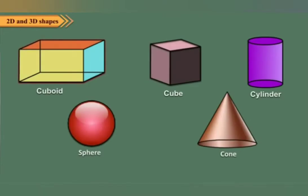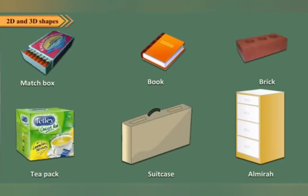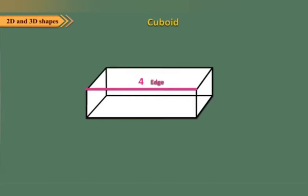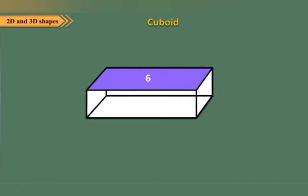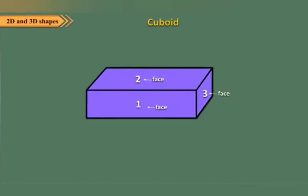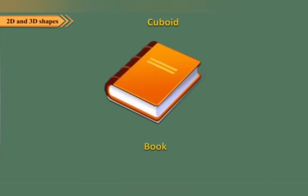Some solid shapes are as follows. Look at the shapes of objects shown here — all these objects have the shape of a cuboid. A cuboid has 12 edges. The point where three edges meet is called a vertex. A cuboid has eight vertices and six faces. In the given figure, three faces are visible and three are hidden. Count the faces of your book: one front face, one back face, one top face, one bottom face, and two side faces — six faces in total.